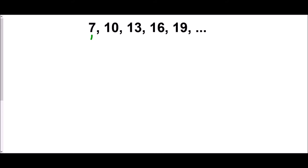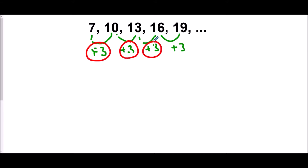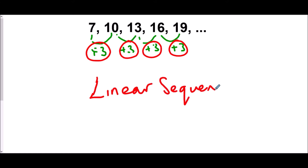Let's start by having a look at the sequence 7, 10, 13, 16, 19. The first thing we generally do when we look at sequences is try to spot a pattern. Here, I'm adding 3 each time: 7 to 10, 10 to 13, 13 to 16, 16 to 19. Every single time we are adding on the same amount. If we add or subtract the same amount every time, that makes it a linear sequence — the term-to-term rule is always to add or subtract the same amount.